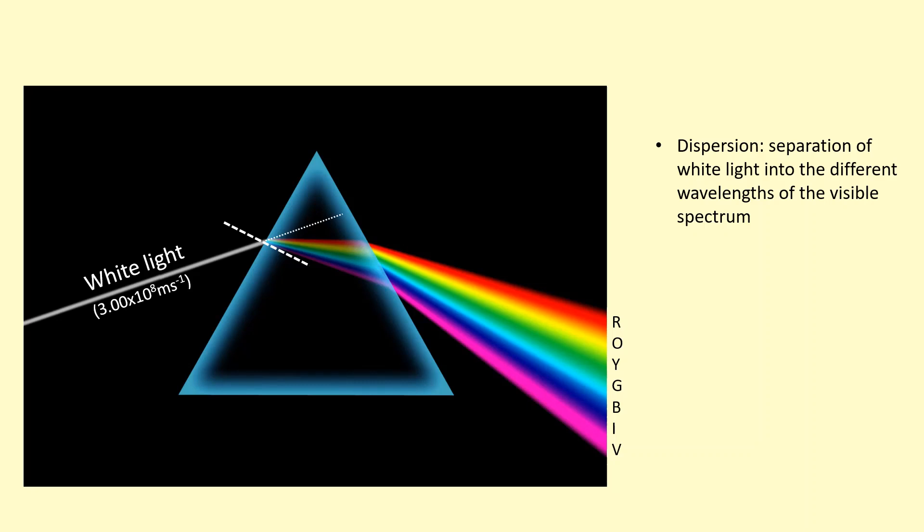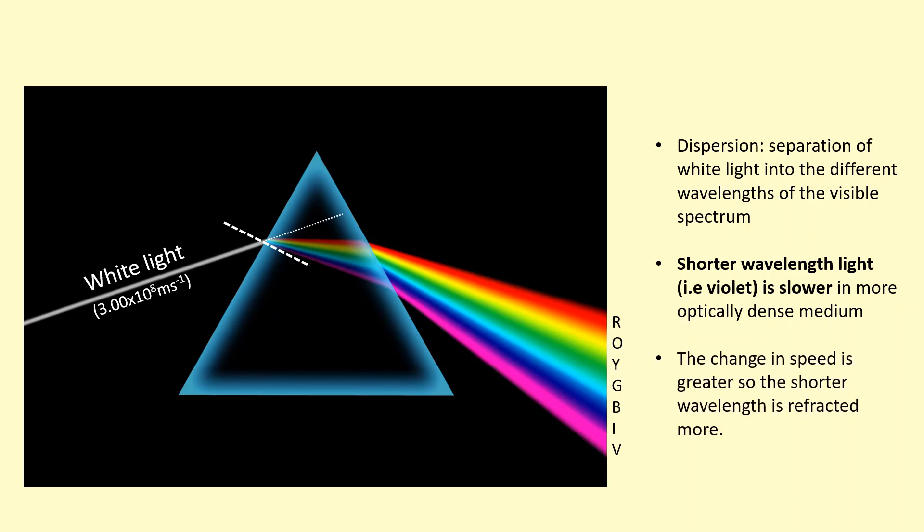Now because it's changing medium and slowing down, they're all bending towards the normal. So both the red wavelength and the violet wavelength, everything in between, is slowing down and bending towards normal. But you can see that the violet is slowing down more. That's because the shorter wavelength light is slower in more optically dense medium. This also means that because its speed changes more, it refracts more and bends more towards the normal.